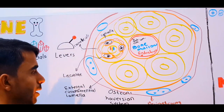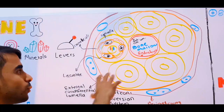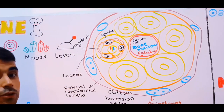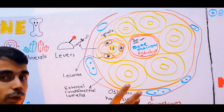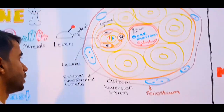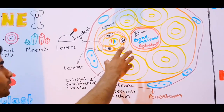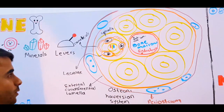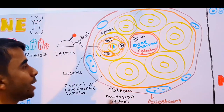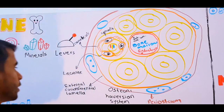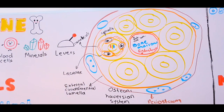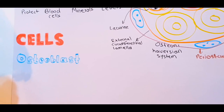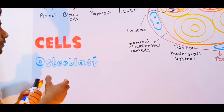From here we can classify all these components into three major categories: the cells of the bone, the matrix of the bone, and the coverings of the bone. Now let's talk about each of them individually in much more detail.